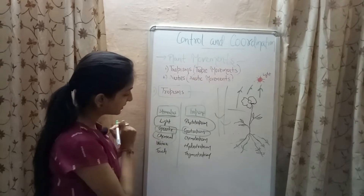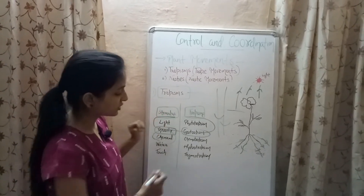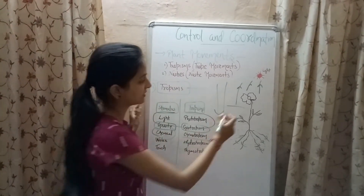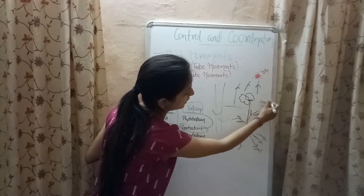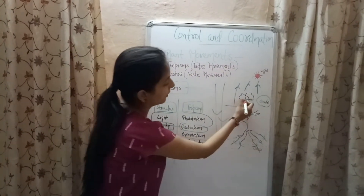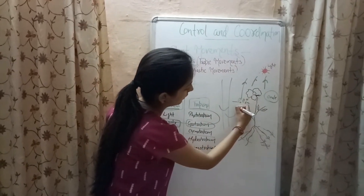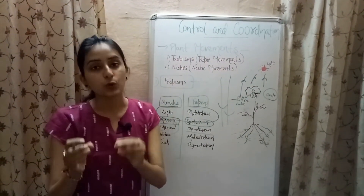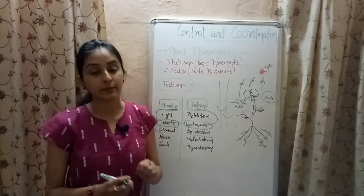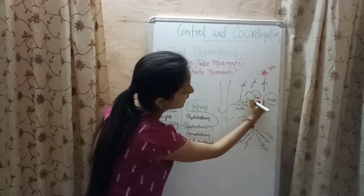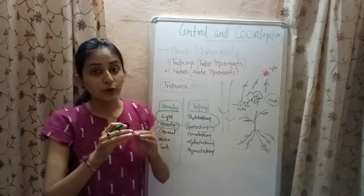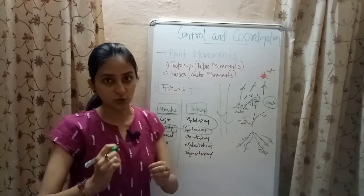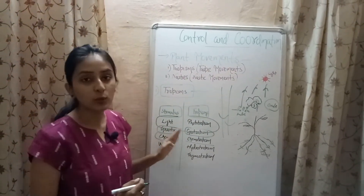When the stimulus is a chemical, the tropism is known as chemotropism. The flower has a female reproductive organ called the ovule and a male reproductive part called the pollen tube. The pollen tube grows toward the ovule — an example of positive chemotropism — because the ovule is surrounded by a sugary chemical substance.